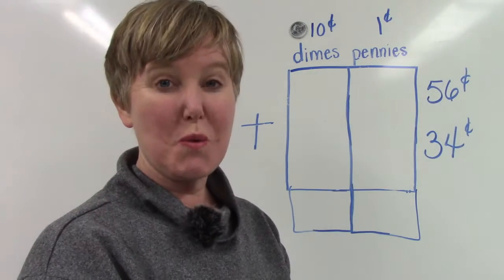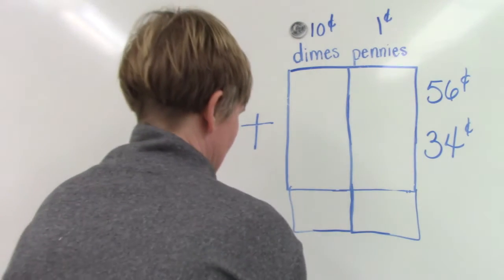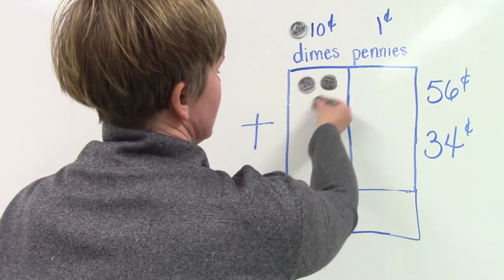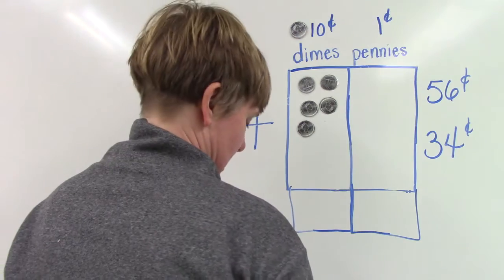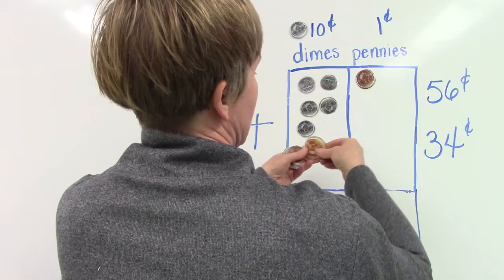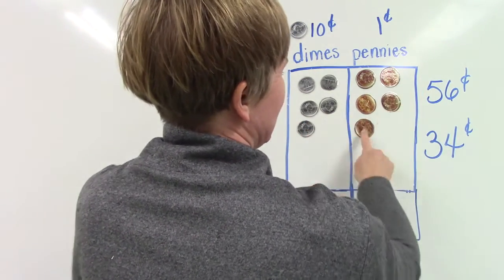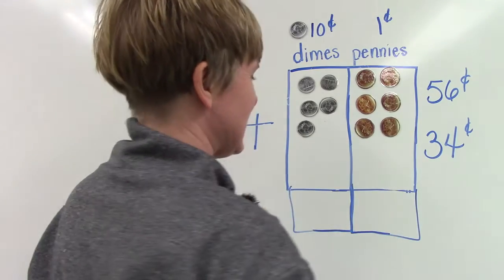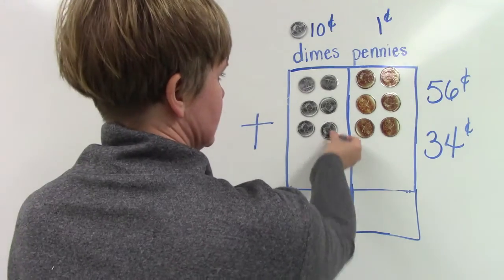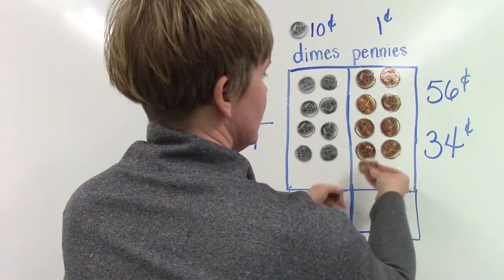Let's try this again. What if we added 56 cents to 34 cents? I'm going to start by putting up five dimes: 10, 20, 30, 40, 50, and now we're going to add six pennies: 51, 52, 53, 54, 55, 56.